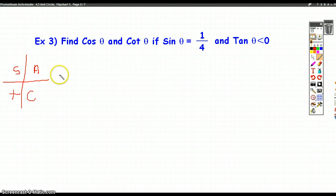Now let's take a look at this example. It says find the cosine of an angle and the cotangent of that angle if the sine of the angle is 1 over 4 and the tangent of that angle is less than zero. In other words, the tangent of the angle is negative.